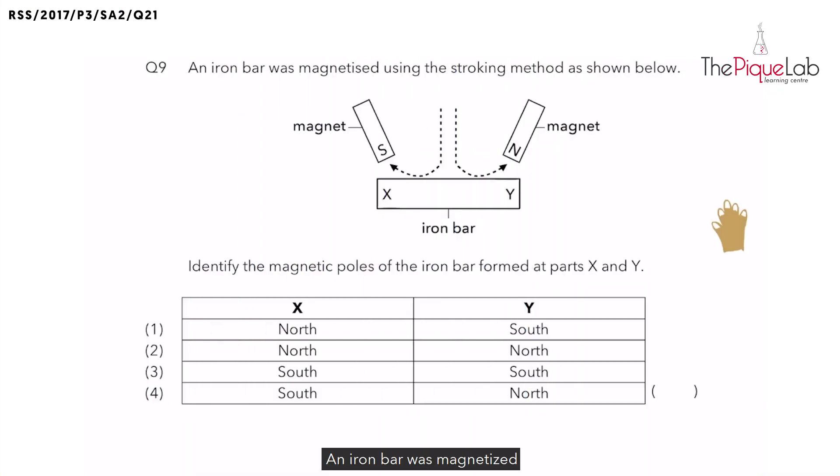An iron bar was magnetized using the stroking method as shown below. We need to identify the magnetic poles of the iron bar formed at parts X and Y. Most students are not very sure on how to determine the poles of the temporary magnet made using the stroking method.